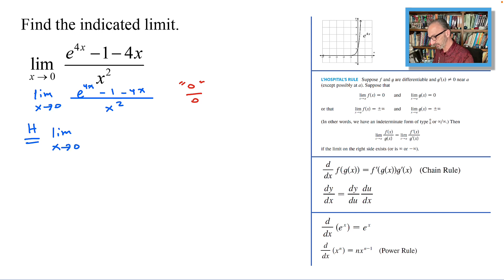The derivative of the top part, as we could see from here, the derivative of e^(4x) is e^(4x) times the derivative of 4x which is 4. So let's write 4 up front, minus 1 will be 0, minus 4x, the derivative of minus 4x will be minus 4. And in the denominator, the derivative of the denominator or g'(x) is 2x.